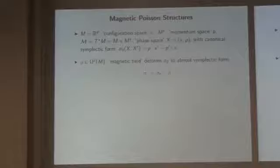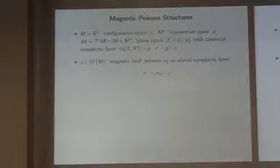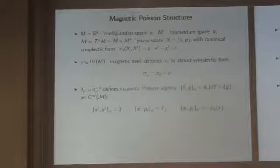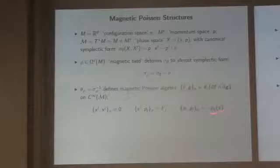I shift my canonical symplectic structure by this two-form. Rho is in general not closed — I don't demand that it's closed. If it were closed, this would be another symplectic structure. So it's non-degenerate but not necessarily closed. It's non-degenerate, so I can look at its inverse, which is a bi-vector, and from that bi-vector I can construct a set of brackets on the algebra of functions on phase space.